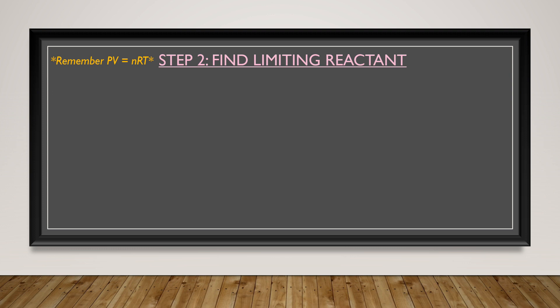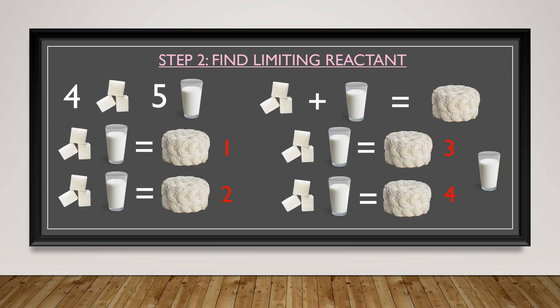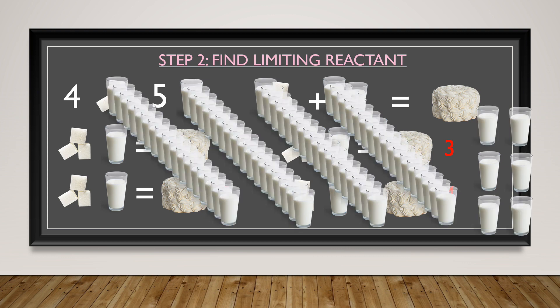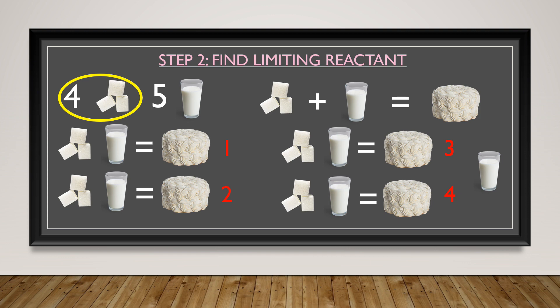Step 2. Here we have to find the limiting reactant, a.k.a. the reactant with a lower number of moles. Here's an easier way to understand this. Imagine you got 4 sugar and 5 milk, and you need 1 sugar and 1 milk to make 1 cake. The maximum number of cakes you can make is 4. It doesn't matter if you have 10 milks, or 50 milks, or 100 milks, or you get the point. Because we are limited by the amount of sugar to make cake, sugar is considered the limiting reactant.